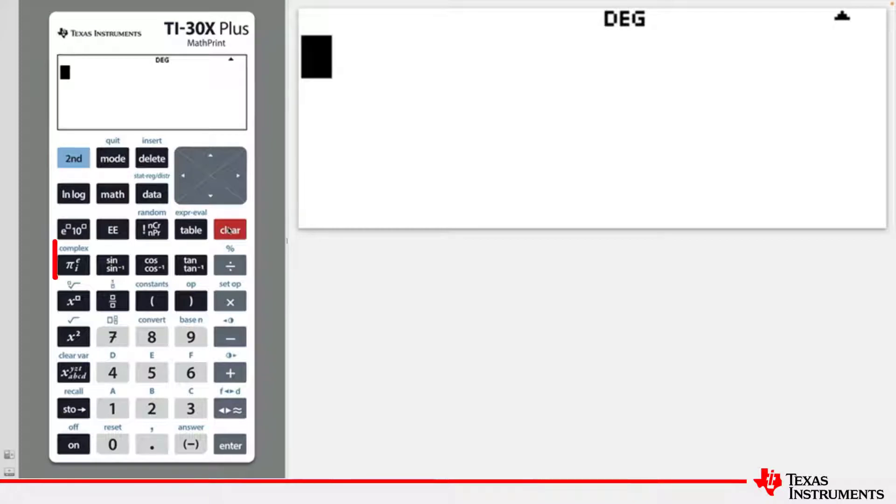There is a multi-tap key for entering Pi. The first symbol is Pi. If you continue to tap that key, it will rotate through available symbols. But we want Pi.